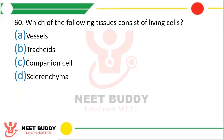Question number 60: Which of the following tissues consists of living cells? Option A: Vessels. Option B: Tracheids. Option C: Companion cells. Option D: Sclerenchyma. The correct answer is option C, companion cells.